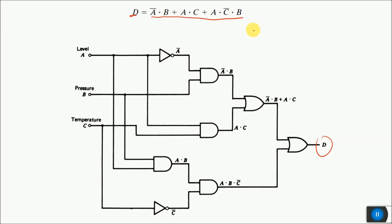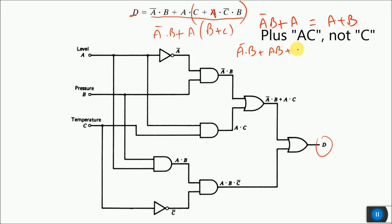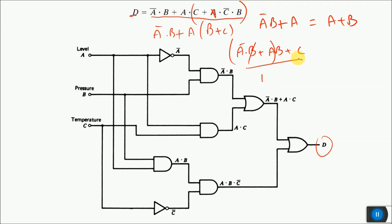We can simplify this equation: since Ā·B + A = A + B, taking A common from two terms gives A(C + C̄B), and applying the same rule gives A(B + C). Then expanding and taking B common, since A + Ā = 1, the final simplified expression becomes B + AC — implementable with very few components.